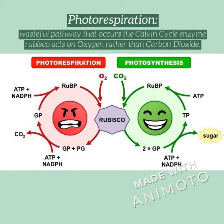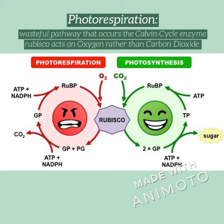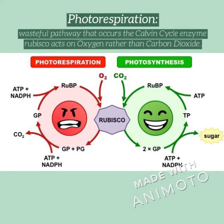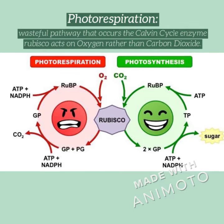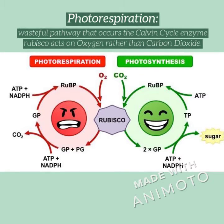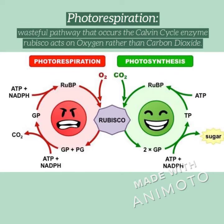For the first word, I've provided a picture and the definition: photorespiration is a wasteful pathway that occurs when the carbon cycle enzyme rubisco — the enzyme in the middle — acts on oxygen rather than carbon dioxide. On the picture, the right side shows photorespiration because it took O2, and on the left it's CO2, so that side is photosynthesis.